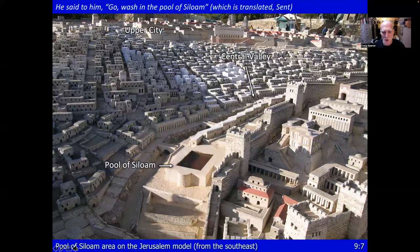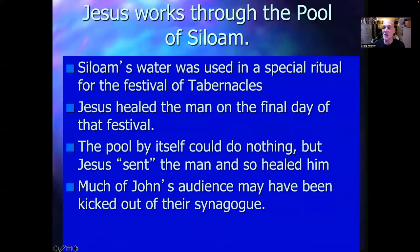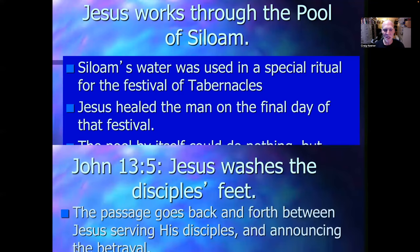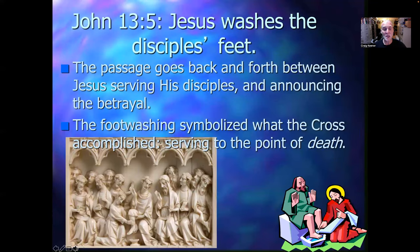Here we see the Pool of Siloam on the Jerusalem model — not too far from the temple, south of the temple. Jesus, in this case, works through the Pool of Siloam. Siloam's water was used in a special ritual for the Festival of Tabernacles. Jesus healed this man on the final day of that festival. The pool by itself could do nothing, but Jesus sent the man and so healed him. Much of John's audience may have been kicked out of their synagogue, so they could really appreciate this.